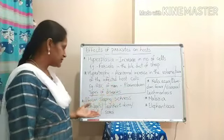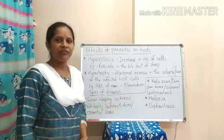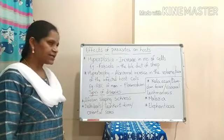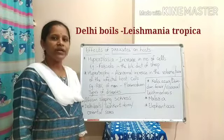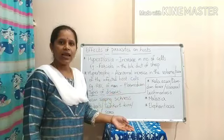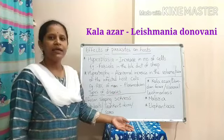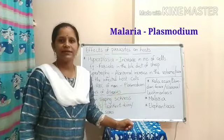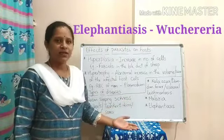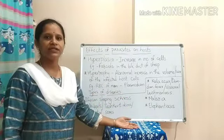Now coming to the types of diseases. The first is African sleeping sickness, caused by Trypanosoma gambiensi. The second is Delhi boils, also called cutaneous ulcers or oriental sores, caused by Leishmania tropica. Next is kala azar, also called dum-dum fever or visceral leishmaniasis, caused by Leishmania donovani. Malaria is caused by Plasmodium, and elephantiasis is caused by Wuchereria bancrofti. These are the different types of effects shown by parasites on the host.